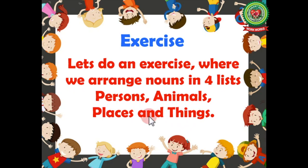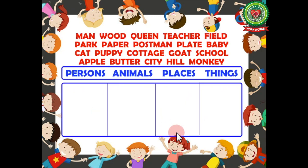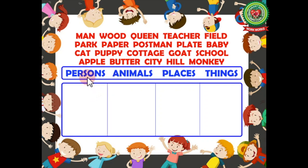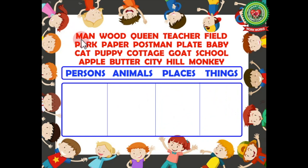Now let's begin with the exercise. Here you have to arrange these nouns into four columns — persons, animals, places or things. A few names are given to you. You have to arrange these naming words in the respective column under persons, animals, places or things. Let's begin.